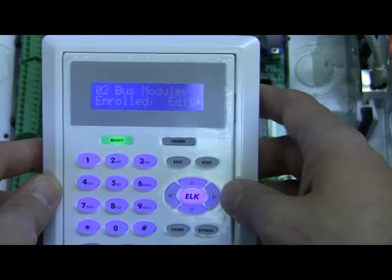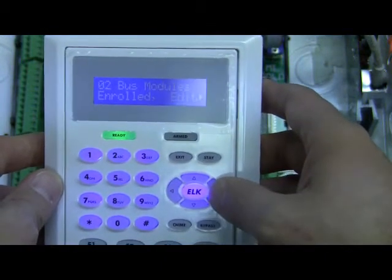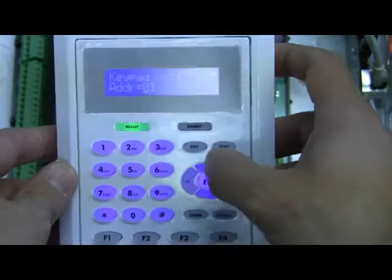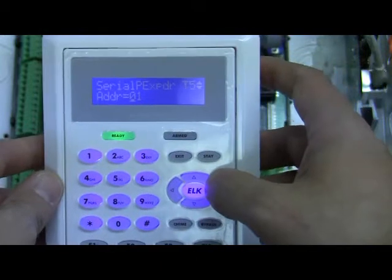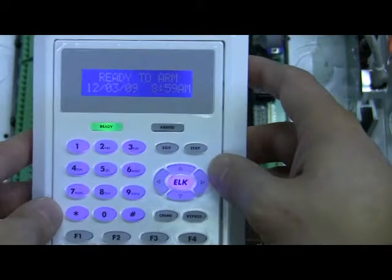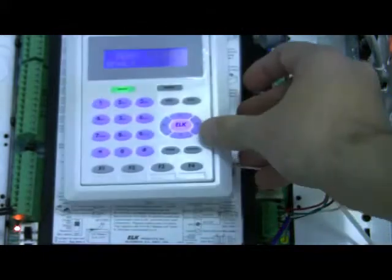You can see here it's saying I've got two modules enrolled. I need a right arrow to see them. So right arrow, I've got my first keypad, which is this keypad, and I've got my serial port expander set at address one. So I need to do a star to get out of that, put that back down now.